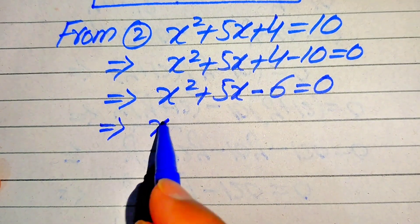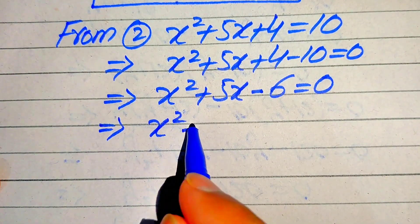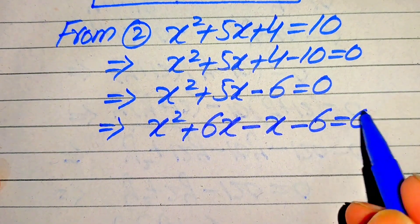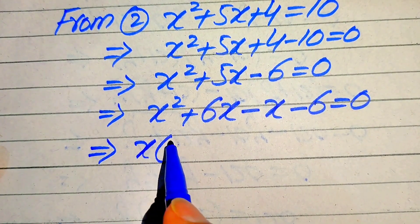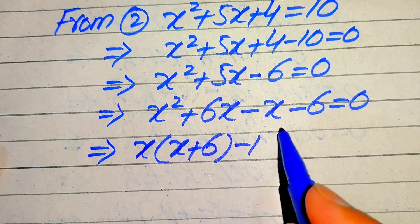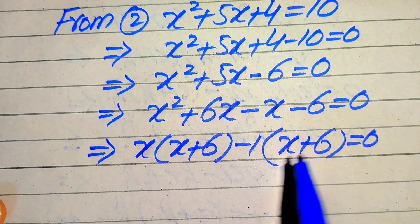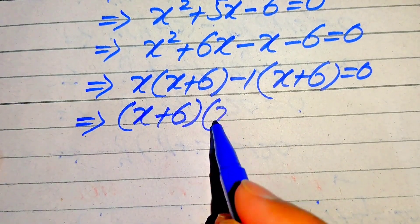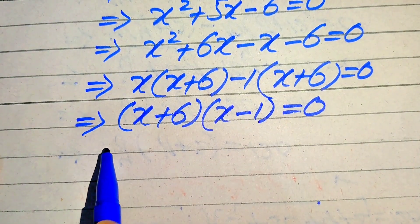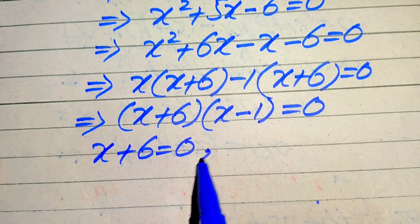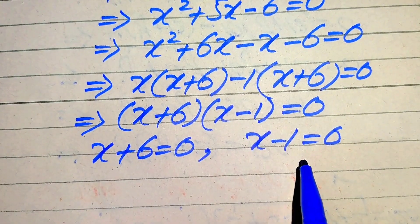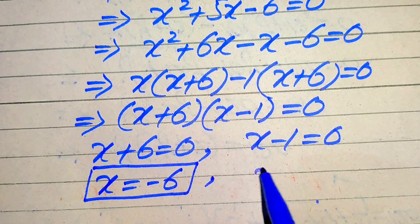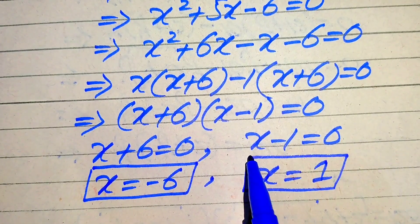We factor this equation by breaking the middle term: 5x is written as 6x − x, giving x² + 6x − x − 6 = 0. Taking x common from the first two terms gives x(x + 6), and taking −1 common gives −1(x + 6) = 0. Taking (x + 6) common gives (x + 6)(x − 1) = 0. So x = −6 is the third root and x = 1 is the fourth root.